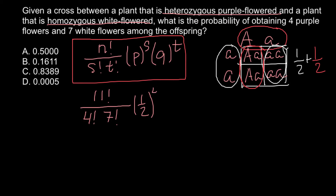We raise that to the power of 4. Now we multiply by the probability of the t event, which is also one half, raised to the power of 7.